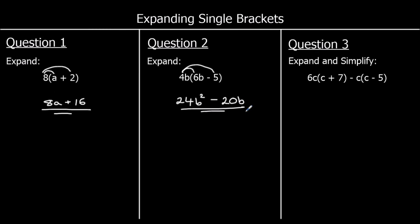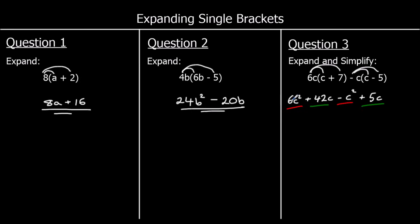And the third one — expand and simplify. 6c times c is 6c squared. 6c times 7 is 42c. We've got a negative c times c, which is negative c squared. And a negative c times a negative 5 is positive 5c. Collecting like terms: 6c squared take away 1c squared is 5c squared. And 42c plus 5c is 47c. So we've got 5c² plus 47c.